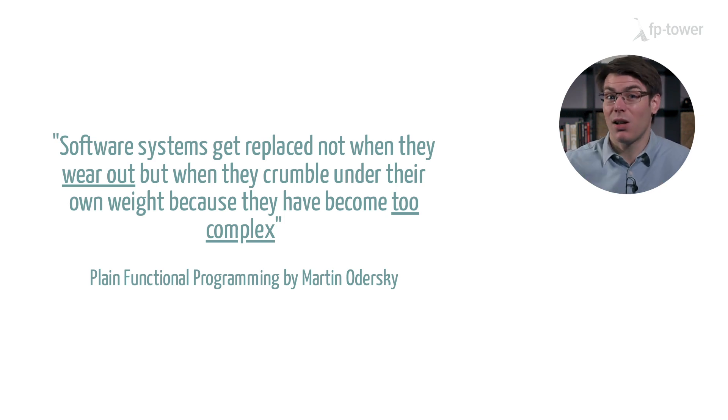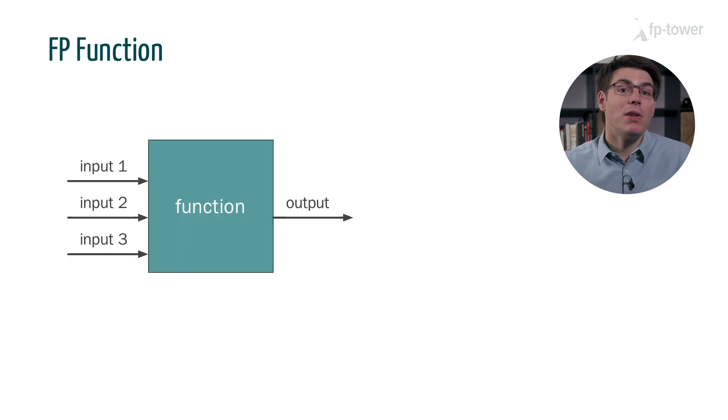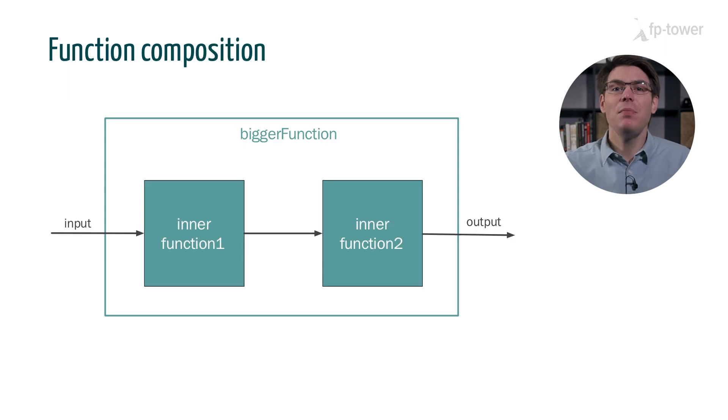Well, FP functions are extremely simple. They are essentially black boxes where input values go in and a single output value comes out. This type of function is very straightforward to test. We don't need complex setup operations or mocking frameworks. We only need to provide the inputs and then check that the output matches our expectation.